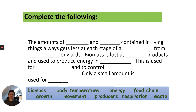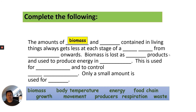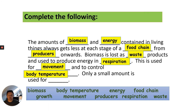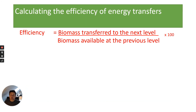Get a pen and piece of paper and fill in the missing gaps — pause the video now. The amounts of biomass and energy contained in living things always gets less at each stage of a food chain from producers onwards. Biomass is lost as waste products and used to produce energy in respiration, which is used for movement and to control body temperature. Only a small amount is used for growth.